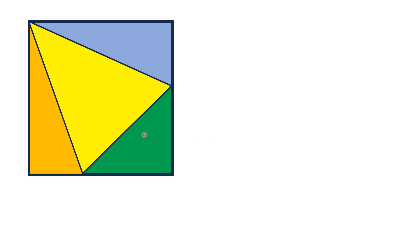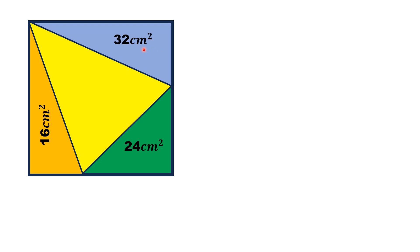Hello everyone. In this video, a square is given which is divided into four portions: orange, green, blue, and yellow. Except yellow, all other portions are right triangles. It is given that the area of the orange region is 16 cm², the green is 24 cm², and the blue is 32 cm². From this limited data, we have to find the area of the yellow region.